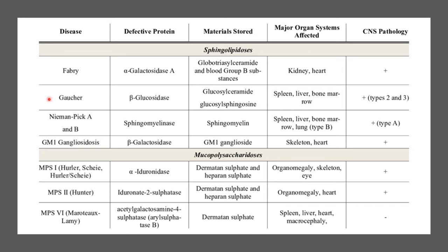For example, in Gaucher disease, the deficient enzyme is beta-glucosidase. Normally, beta-glucosidase helps break down glucosylceramide and glucosylsphingosine. Because the enzyme is deficient in Gaucher disease, these complex materials are not broken down into micronutrients — instead, they get accumulated as waste products within the cell. This mainly affects the spleen, liver, and bone marrow, and it also affects the CNS.